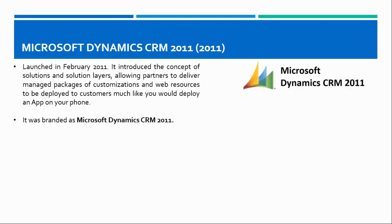It was branded as Microsoft Dynamics CRM 2011. Up until this point the naming format used numbers like CRM 1.0, 1.2, 3.0, and 4.0. But with this version they changed the naming convention to reflect the year in which that version was released, or at least the year in which that version was targeted.